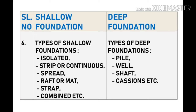Point six: types of shallow foundations include isolated, strip or continuous, spread, raft or mat, strap, combined, etc. Types of deep foundations include pile, well, shaft, caissons, etc. Thank you for watching — subscribe for more videos.